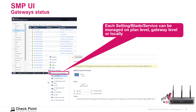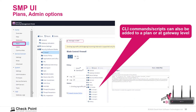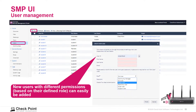The gateway status shows each setting blade or service, which can be managed at the plan level, gateway level, or locally. This displays the security software blades that are enabled. CLI command scripts can be added to a plan or at the gateway level. It is also very easy to add new users — go to Users, select New, provide a user ID, name, email, role, and password.